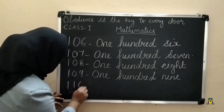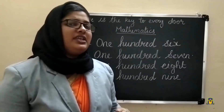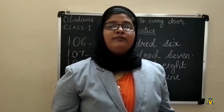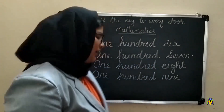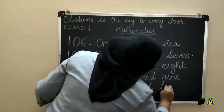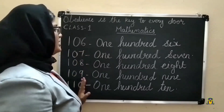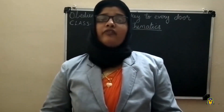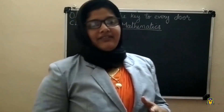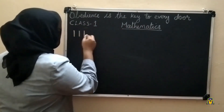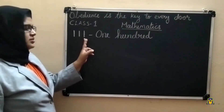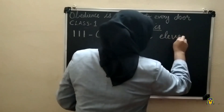Next step: one hundred and ten, 110. Once again, the spelling of one hundred — in the hundreds place, one is there — O-N-E H-U-N-D-R-E-D, then T-E-N, ten. These are the numbers and their number names. One hundred and ten, then one hundred and eleven: O-N-E H-U-N-D-R-E-D, E-L-E-V-E-N, eleven.